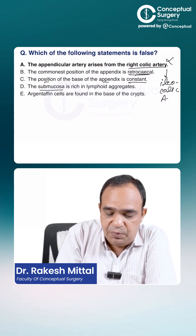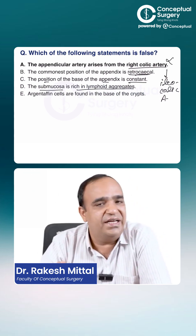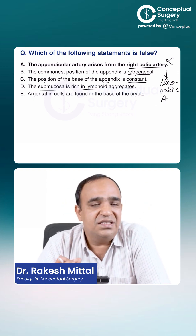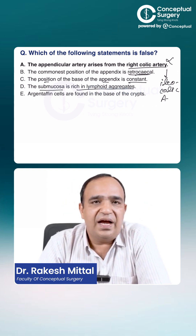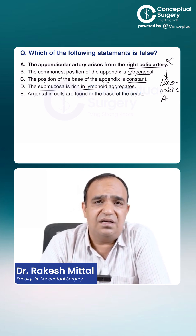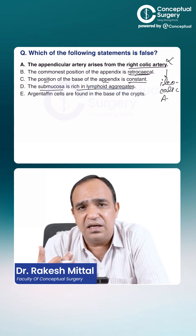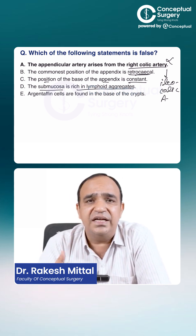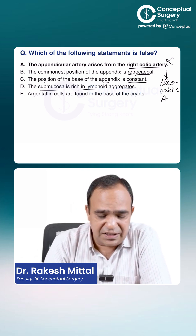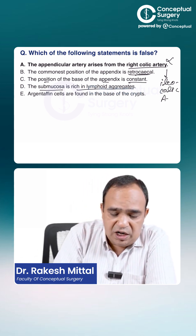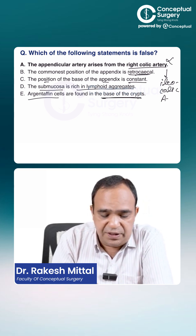The submucosa is rich in lymphoid aggregates — that is true. It is rich in lymphoid tissue, and obstruction of this lymphoid tissue is the starting event in acute appendicitis.